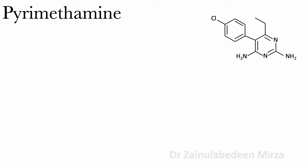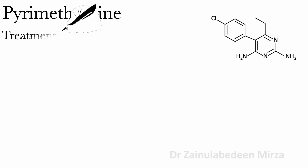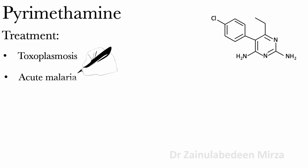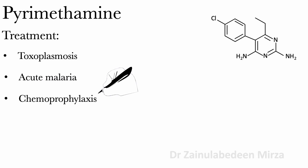Pyrimethamine is used to treat toxoplasmosis, acute malaria, and chemoprophylaxis of malaria.